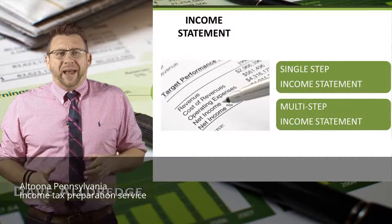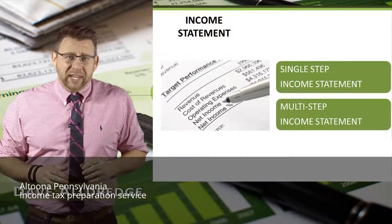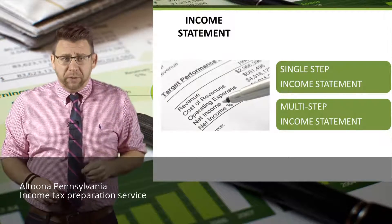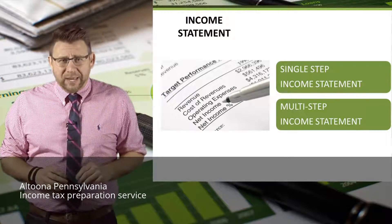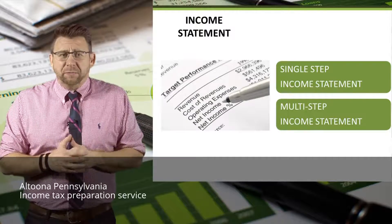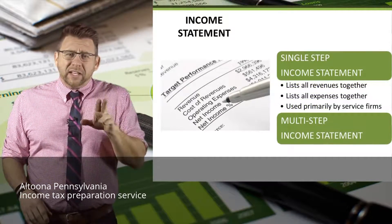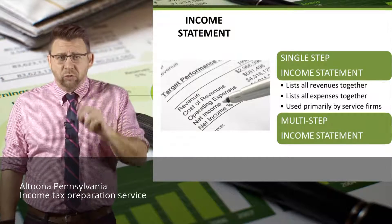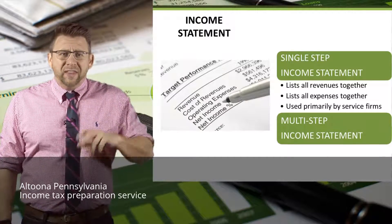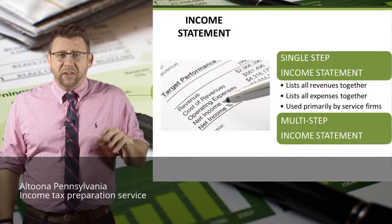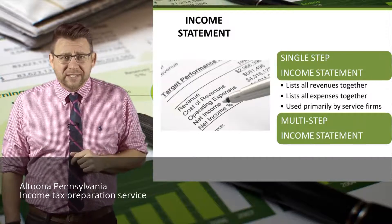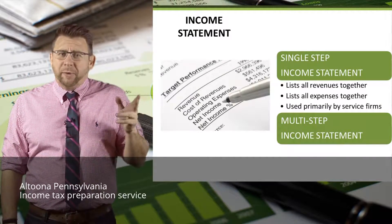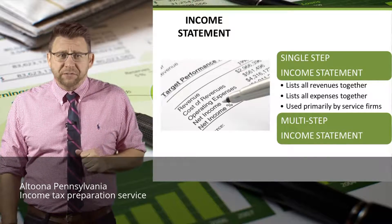There are two primary formats for the income statement: the single-step income statement, which you are already familiar with, and the multi-step income statement, which we will learn about in this podcast. The single-step income statement lists all revenues together and totals them for total revenue, then all expenses are listed together and totaled for total expenses. The difference is then net income. This format is primarily used by service firms.